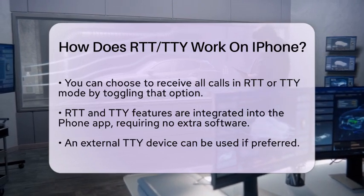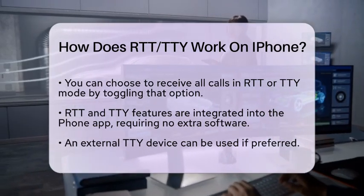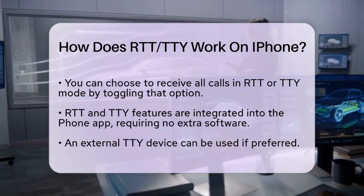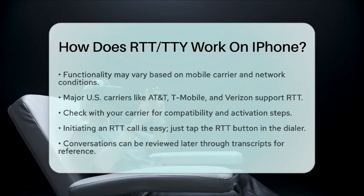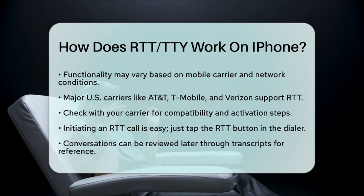In the United States, major carriers like AT&T, T-Mobile, and Verizon support RTT. It is a good idea to check with your carrier for specific details about compatibility and any activation steps you may need to follow. Once you have enabled RTT, initiating an RTT call is simple — just tap the RTT button in the dialer. This will open a text conversation view where your messages will appear as you type. You can also review transcripts of your conversations later, which can be helpful for keeping track of important discussions.